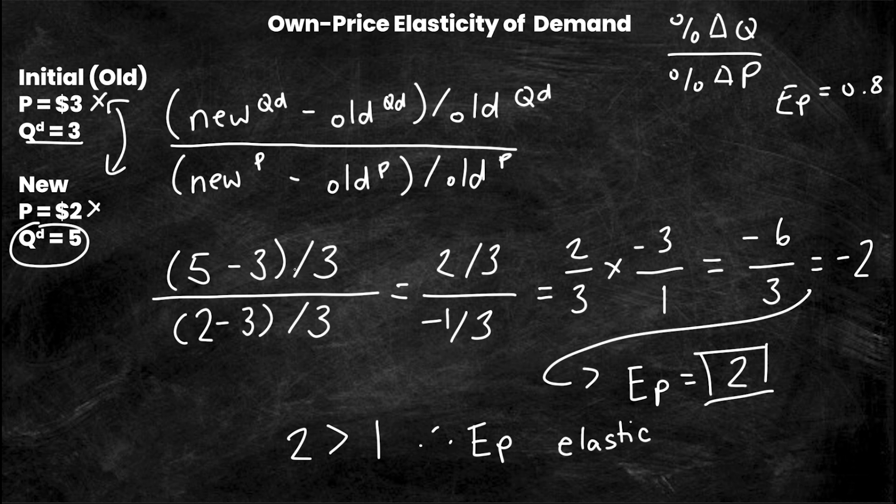These are using the exact same numbers but flipped. The old became the new and the new became the old. What this is telling you is that the elasticity coefficient equaling 2 and the elasticity coefficient equaling 0.8 is very different, yet the same numbers are used. So when you're on a test scenario, make sure you are crystal clear understanding what the initial price and quantity is and what the new price and quantity are.